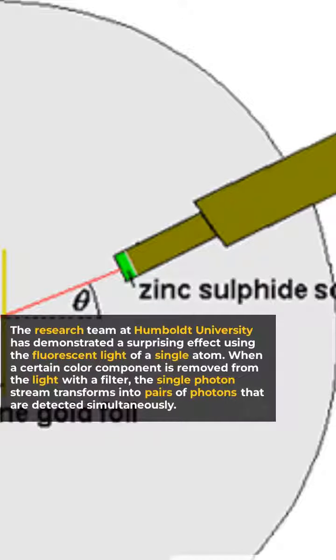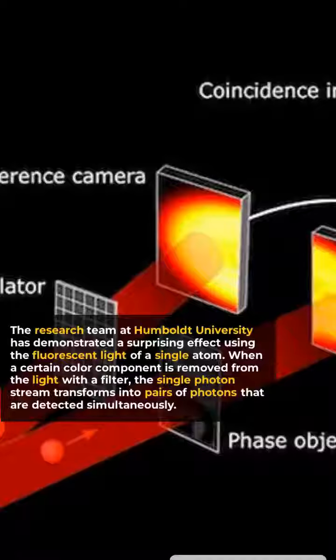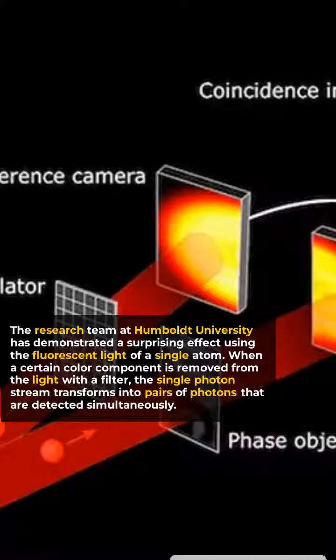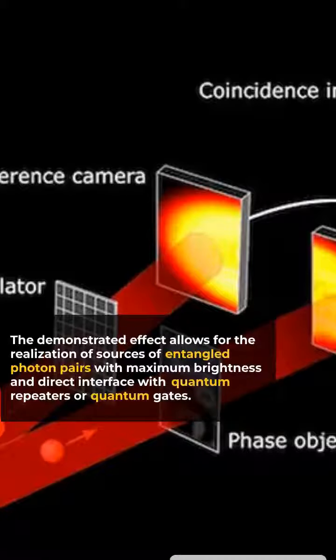When a certain color component is removed from the light with a filter, the single photon stream transforms into pairs of photons that are detected simultaneously. The demonstrated effect allows for the realization of sources of entangled photon pairs with maximum brightness.